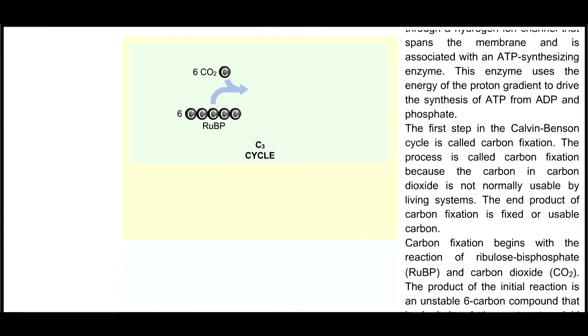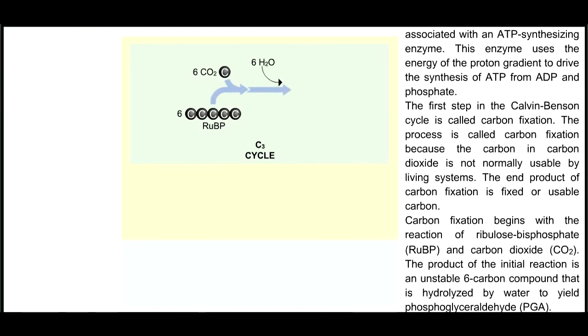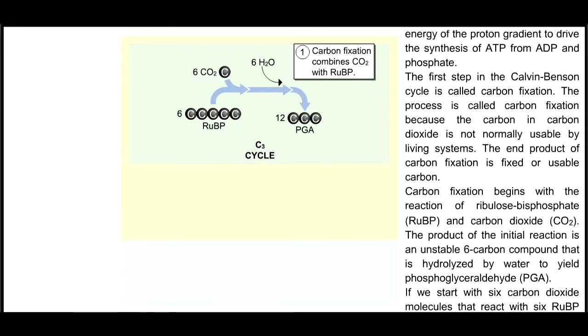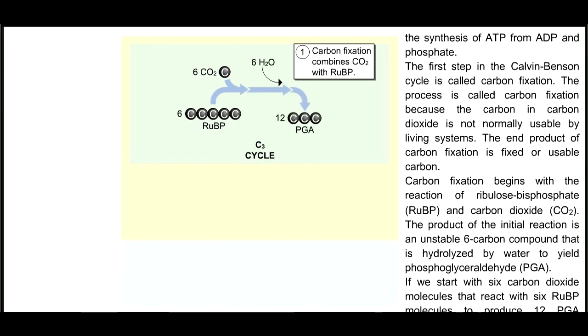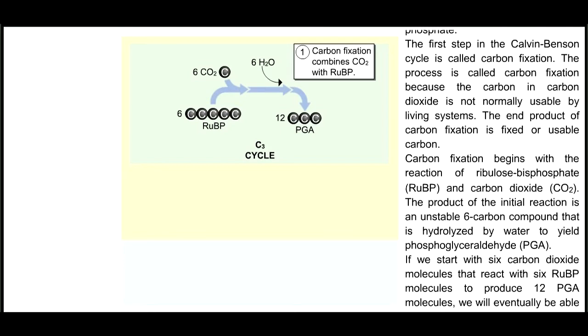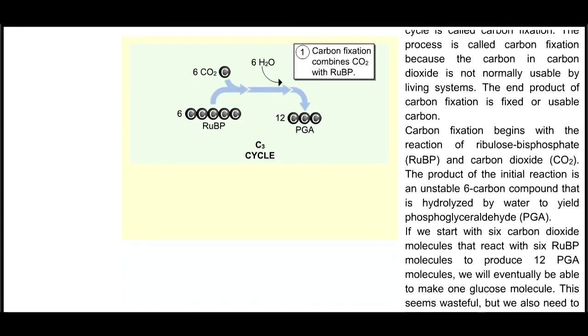The product of the initial reaction is an unstable 6-carbon compound that is hydrolyzed by water to yield phosphoglyceraldehyde, PGA. If we start with 6 carbon dioxide molecules that react with 6 RuBP molecules to produce 12 PGA molecules, we will eventually be able to make one glucose molecule.